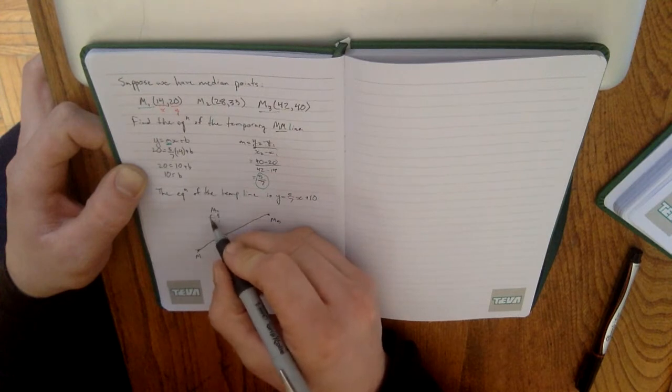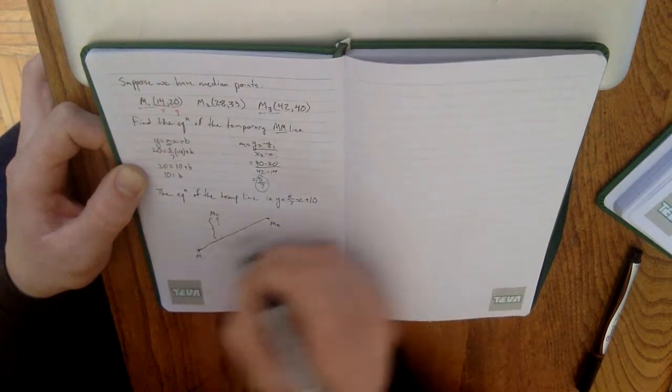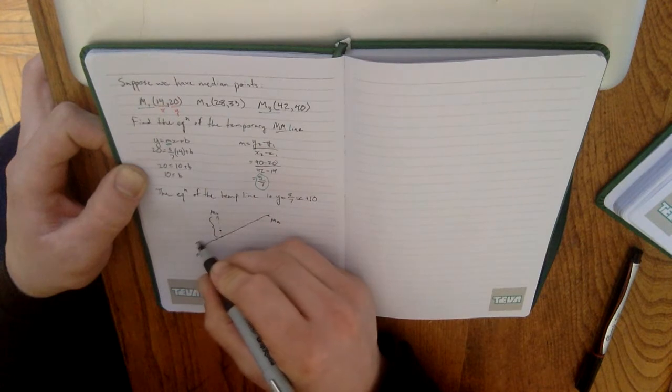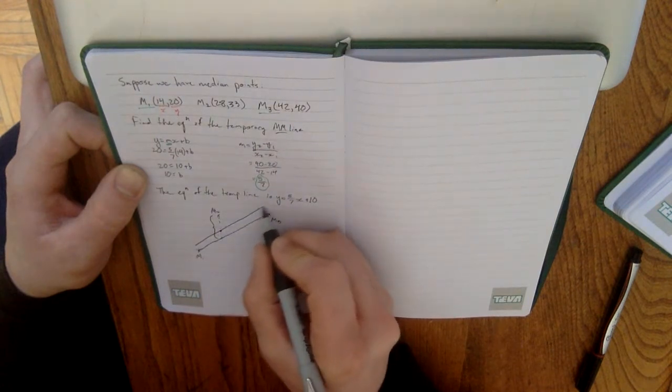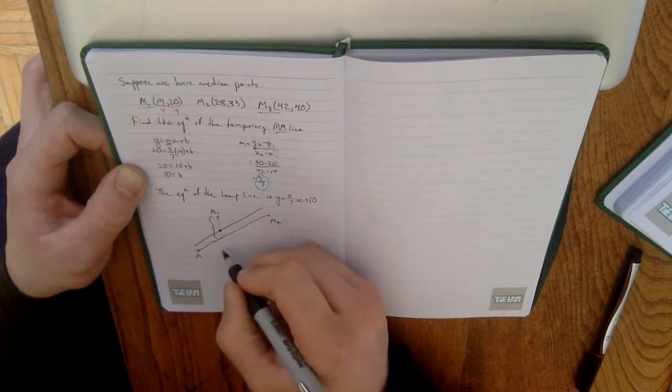So, what we need to find is we need to find a third of this distance. So, this distance right here between the median-median line, the temporary one, and the actual median-median line, which would show up somewhere there. So, our actual median-median line will have the same slope, but it will go through a point that's one-third of the way to M2.